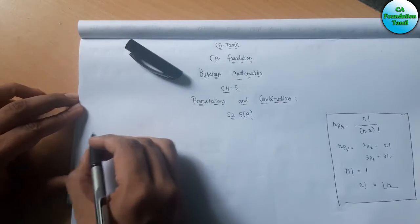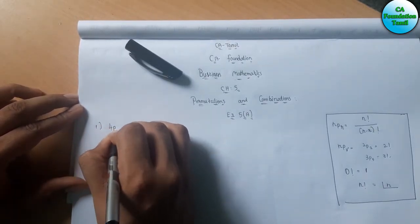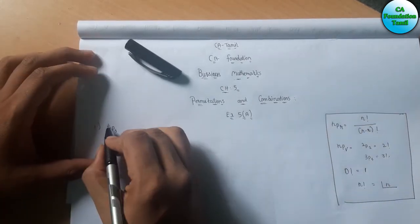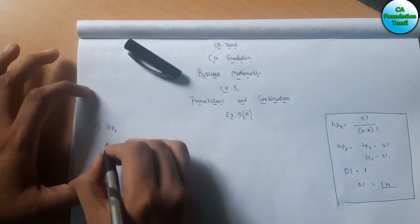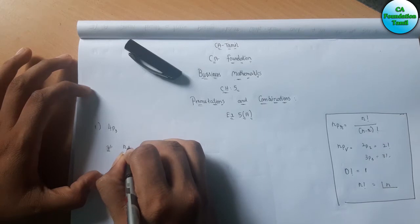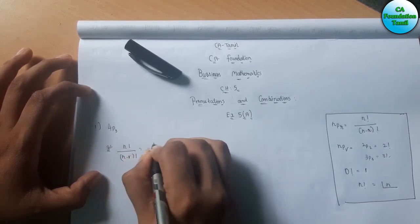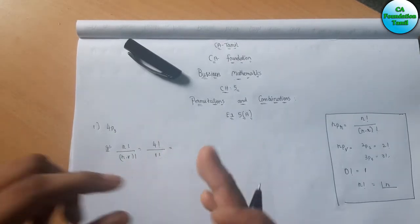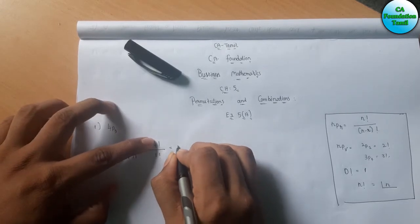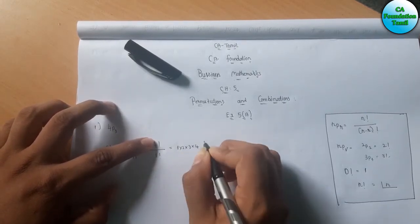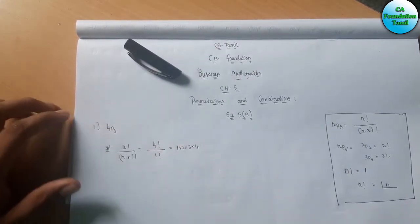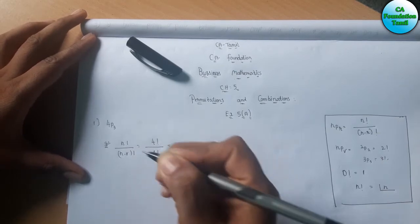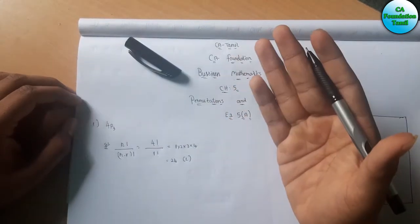We will see example 5a. For 4P3, we apply the formula: 4 factorial divided by N minus R factorial, which is 4 minus 3 factorial, giving 1 factorial. Expressing 4 factorial: 1 into 2 into 3 into 4 equals 24. So 4P3 equals 24. The answer is option C.